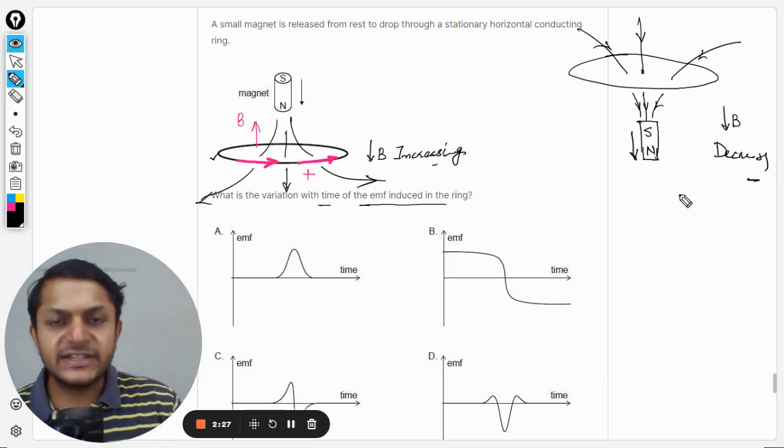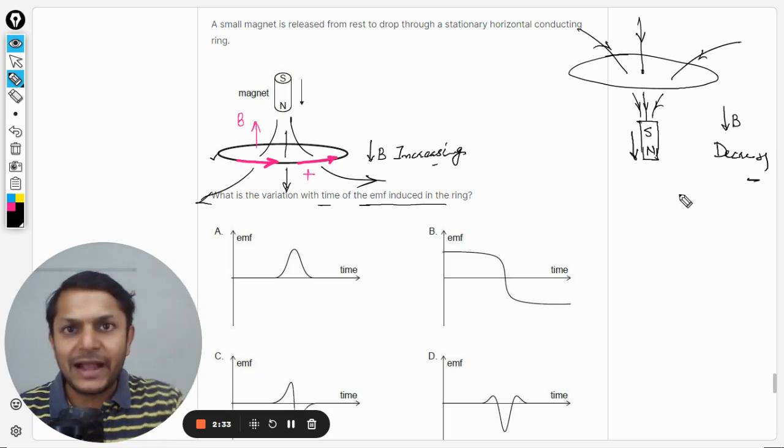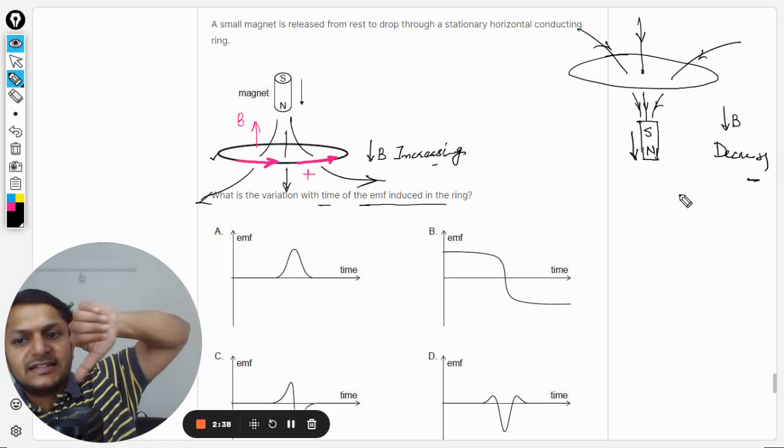So the ring will say I will not let you decrease, so it wants to increase the magnetic field which is in the downward direction. How can this be done? By using this hand, like this is the way the current should be moving.